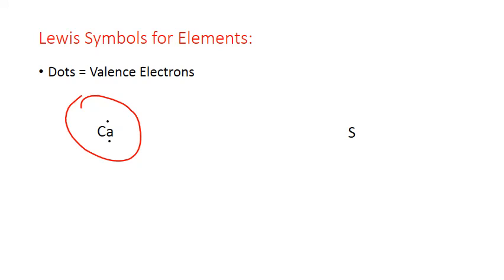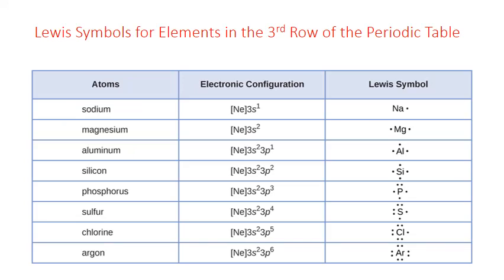Now let's do the Lewis symbol for sulfur. Sulfur is in column 16 of the periodic table, so a neutral atom of sulfur has six valence electrons. We place the valence electrons one to a side until all four sides have one, and then we pair up on two of the sides — giving us six dots around our symbol for sulfur. Here we see the Lewis symbols for all the elements of the third row of the periodic table. As we go across the row, the number of valence electrons increases by one, and the number of dots around the symbols increases by one until we reach our noble gas argon, which has a full set of eight.